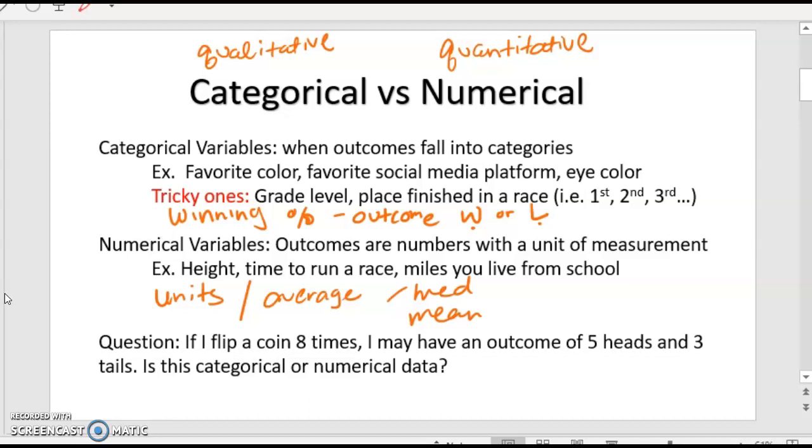If you flip a coin eight times, you may have an outcome of five heads and three tails. So although those are countable outcomes, those are still going to be categorical variables.